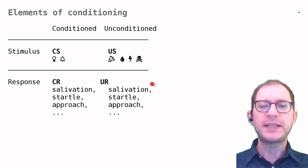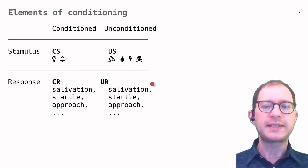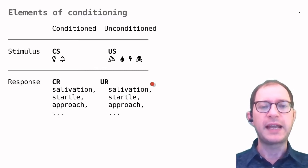The stimulus that is presented before the US is called the conditioned stimulus, or CS. This is a stimulus that, at the beginning of the experiment, has no special significance to the animal. In Pavlov's original experiments, this was a sound or a light.